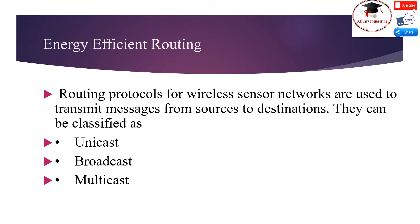Unicast routing is used to send a message generated by a sensor node to a single destination or sink. Broadcasting is used to send a message from a sensor node to every other node in the network. Multicasting is used to deliver messages from a single source to a set of destinations. Multicasting protocols try to minimize the consumption of network resources. For instance, sending one copy of data to each destination using Unicast is not considered multicast routing.